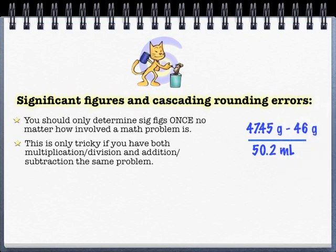You might be tempted to figure out sig figs in the middle. For example, you might be tempted to do the subtraction problem, figure out the sig figs for that, and then keep marching on. The only problem is that that leads to what's called cascading errors.